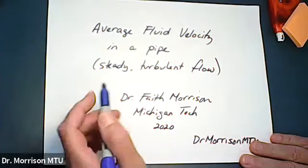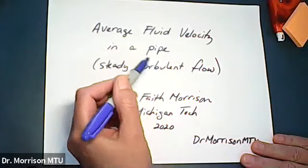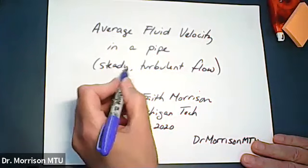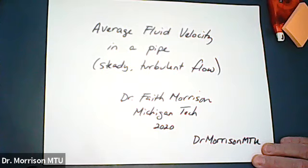The video today is to calculate the average fluid velocity in a pipe in terms of the volumetric flow rate of the fluid in steady turbulent flow. This is a circumstance that's very common when using the mechanical energy balance.